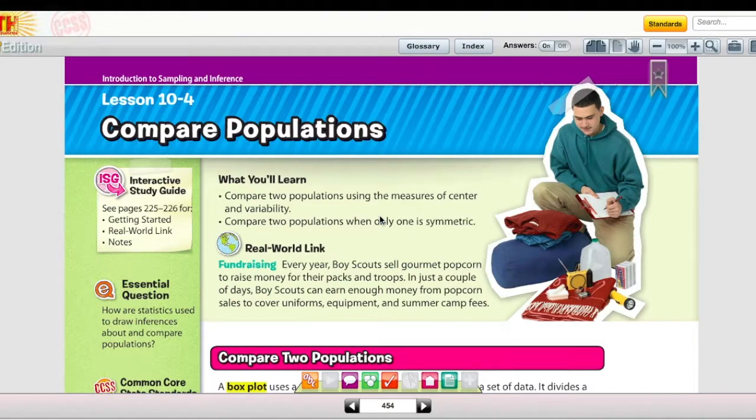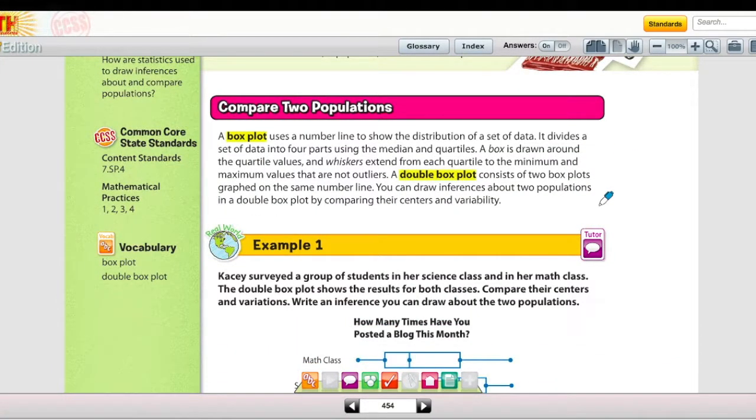In Lesson 10-4, you're going to be comparing populations, and you'll be comparing two populations using the measures of center and variability. You're also going to compare two populations when only one is symmetric. Remember, the essential question for Chapter 10 is: how are statistics used to draw inferences about and compare populations?